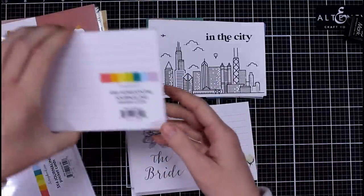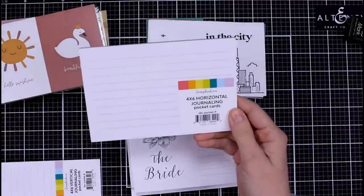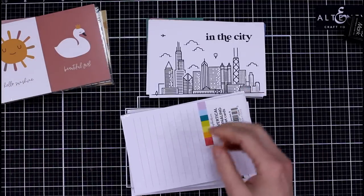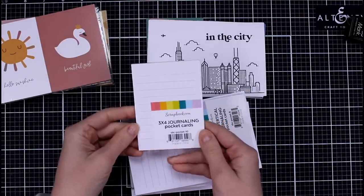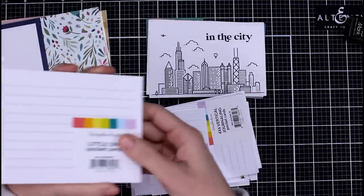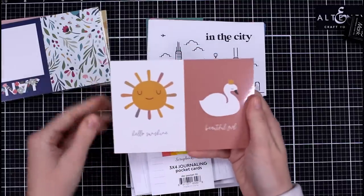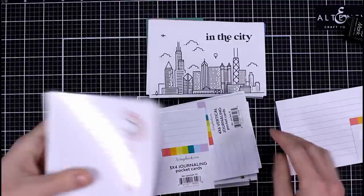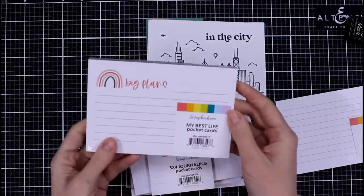And then a mini just to fit into your binders. This is Little One pocket cards. This is Big Plans. I'm ready for '21. And this is Everyday Moments.